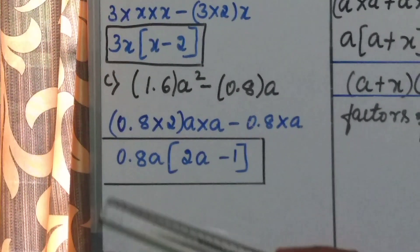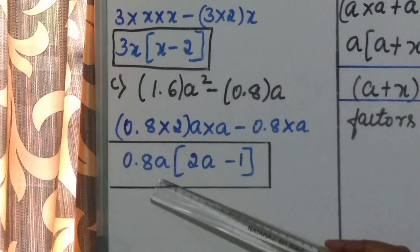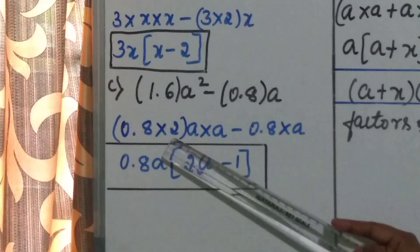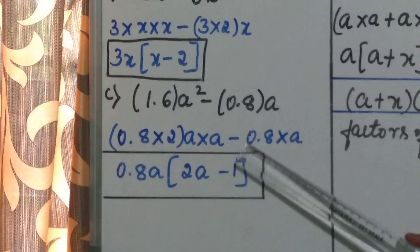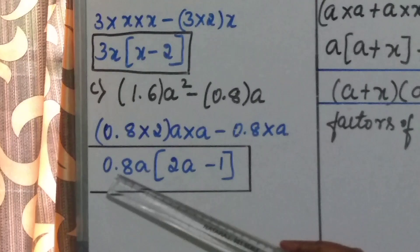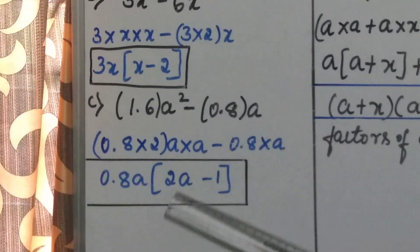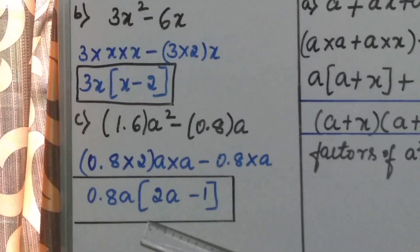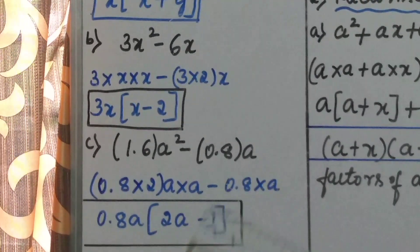Taking 0.8a outside the bracket, the remaining terms are: first term 2 into a, minus 1. Therefore 0.8a into 2a minus 1 are the factors of the given algebraic expression.